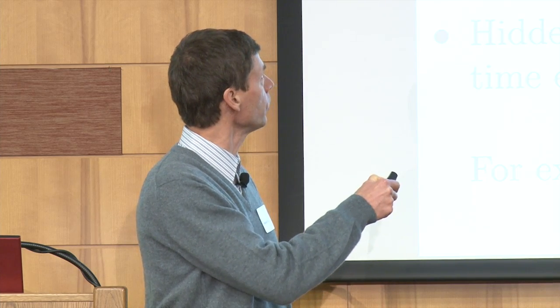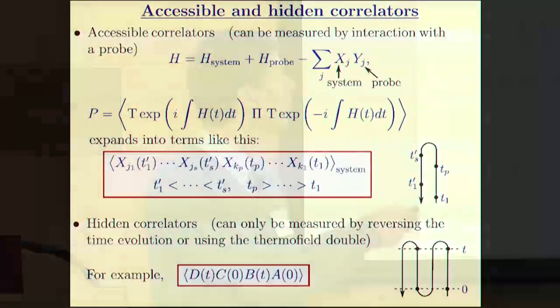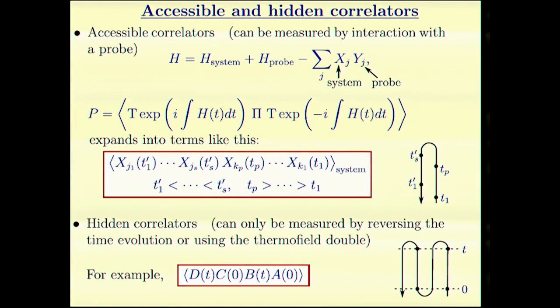There are some correlators that I will call accessible correlators because they can be easily measured using a probe interacting with the system. We write the Hamiltonian in this way: it's the system Hamiltonian plus the probe Hamiltonian plus some interaction. We evolve the system for some time, starting from a product state, then measure some observable.